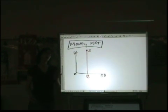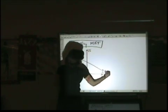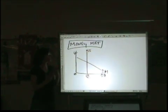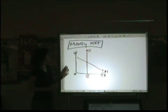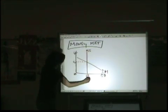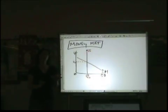Now, demand for money is going to slope down. The reason for that is because money has a price. Just like any good has a price, money has a price. The price is the interest rate that you would pay if you borrow it. So your equilibrium in the money market is going to be an interest rate and a quantity. And that is where we start.